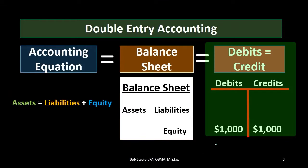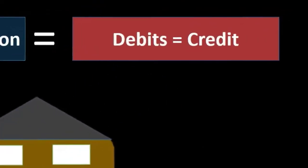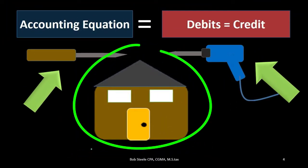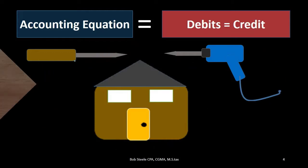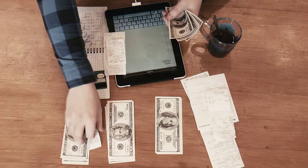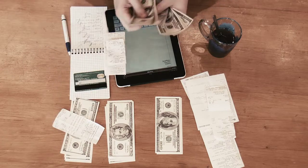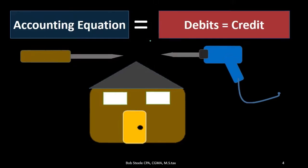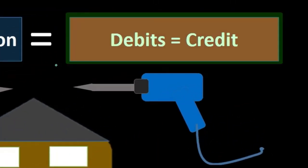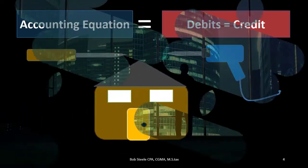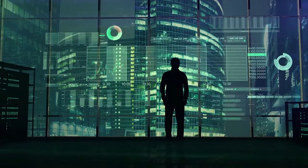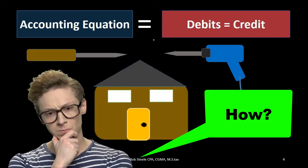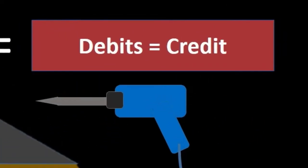What then is the point of learning debits and credits? To answer that question, I would compare debits and credits to something like building a house with a screwdriver versus an electric screwdriver. We could actually build the entire financial statements using the accounting equation, but it's a lot more bulky. Debits and credits are going to streamline the process and make it easier for us to compile data and put it into a format that can more easily be converted into financial statements.